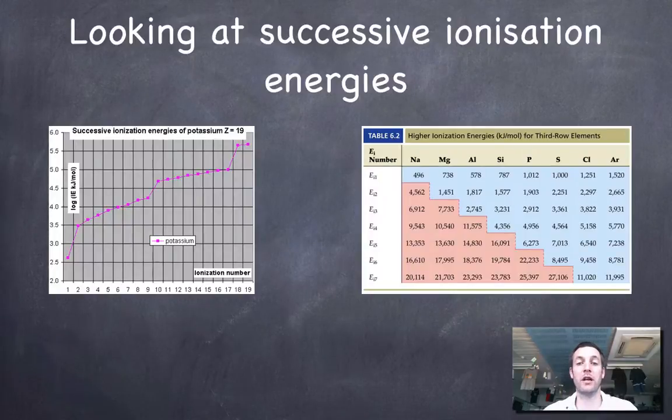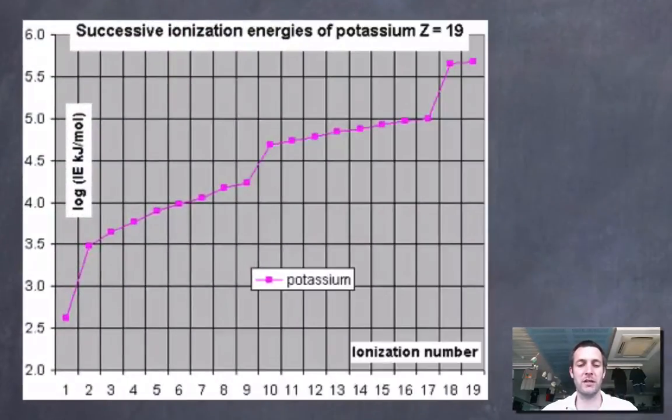Now, if we look at the successive ionization energies of any particular atom, bear in mind that around the same time that people were looking at line spectra and trying to determine something from them, we were also getting information about ionization energies and our view of the atom was gradually evolving. And I imagine it must have been really quite an incredible time to be around if you were in this field because you're seeing all this different evidence coming together.